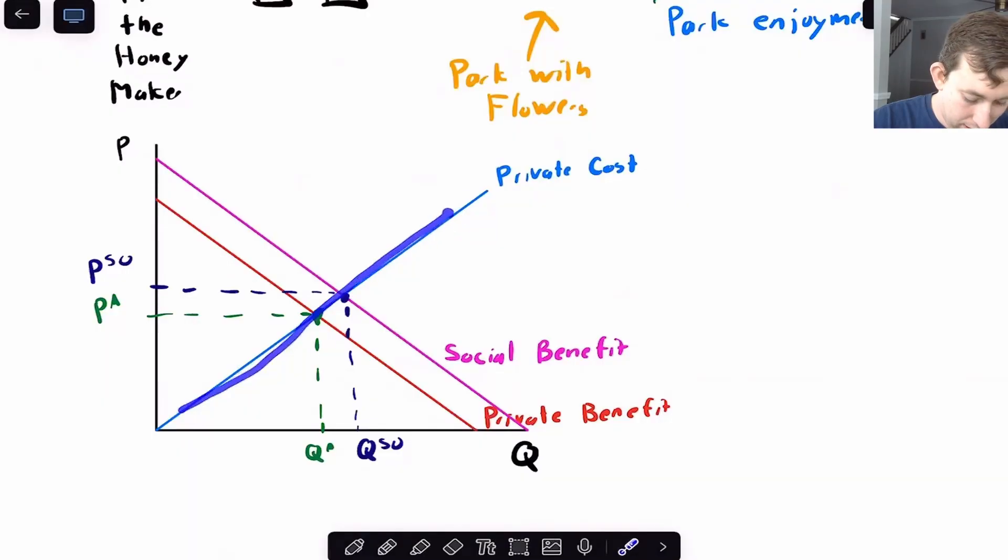Notice that the private cost is right here. This is the private benefit. So this is like everyone gets to enjoy their own honey, Bill gets paid by selling the honey, but that's not taking into account the fact that people get to go to this park and see all these beautiful flowers. So if we want to take that into account, we need to add that to the social benefit.